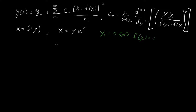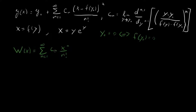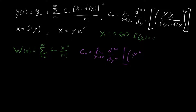That means our Lambert W of x equals zero plus a series: sum from n equals one to infinity of c_n · x^n / n!. Now, what about these c_n's? That's usually where things get tough. So c_n equals a limit as y goes to zero of the (n−1)-th derivative of the quantity y^n over f(y)^n, where f(y) = y·e^y, all to the n.